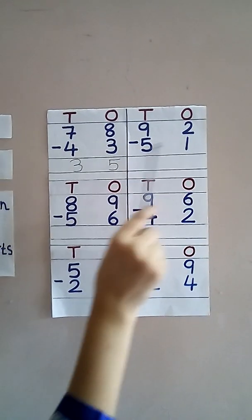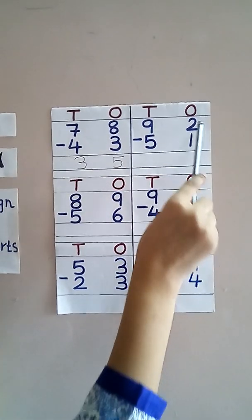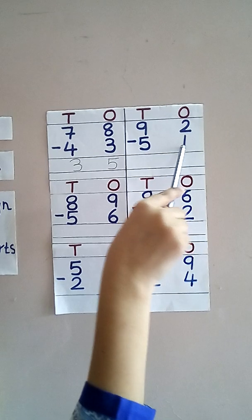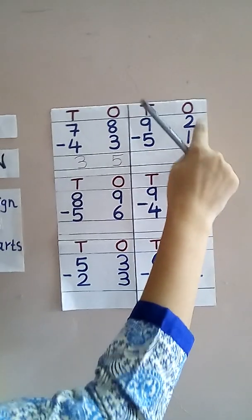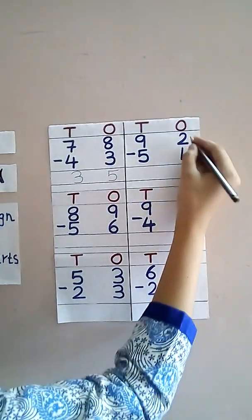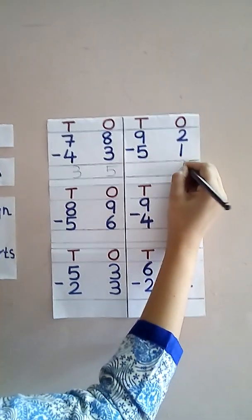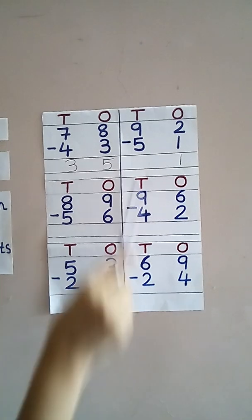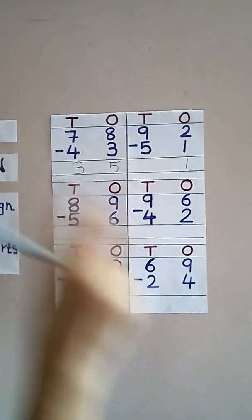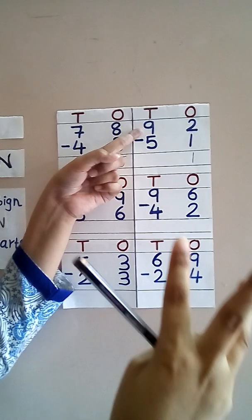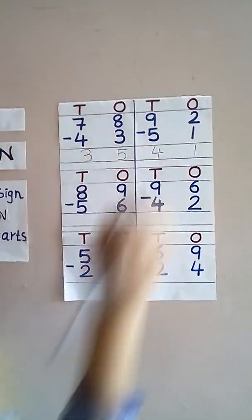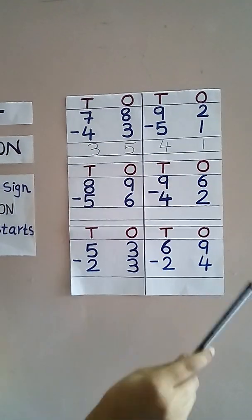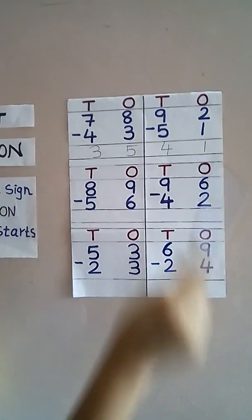Now next one: 92 minus 51. The ones digits are 2 and 1. Start from the next number — what is 1? Count from next number that is 2. And here also 2, so only 1 will come. Write 1. Now 9 minus 5: we have to count from the next number that is 6, up till 9. So: 6, 7, 8, and up till 9 — how much did we get? We got 4. So write down 4. When we subtract 92 from 51 we get 41.